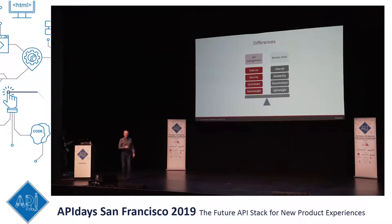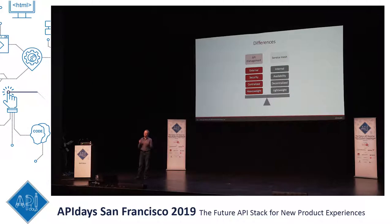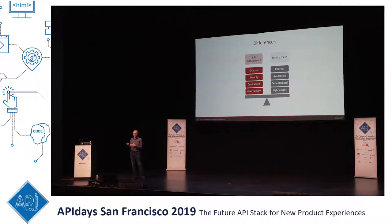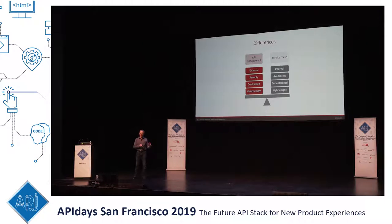Some differences: API management tends to be external; service mesh is internal. API management is about security as the key priority. The internal side is about availability — always being on, making services scale. Service meshes tend to be decentralized so you can spread across teams and try different technologies. API management tends to be more centralized and heavyweight because of auditing, regulatory compliance, and security lockdown requirements.